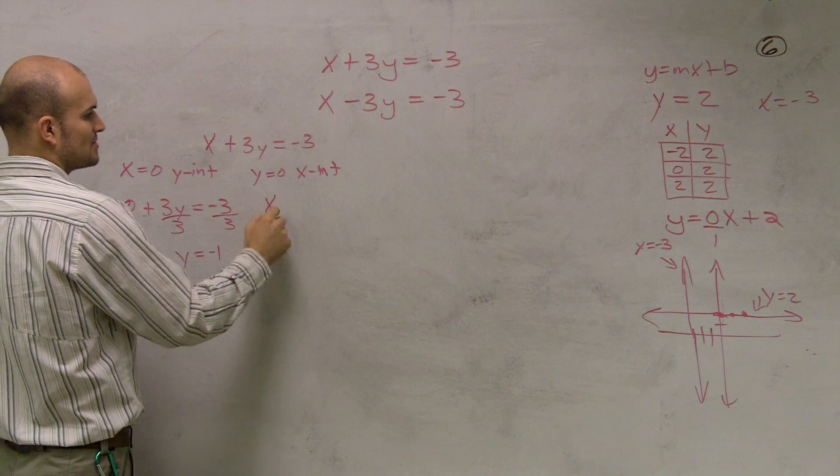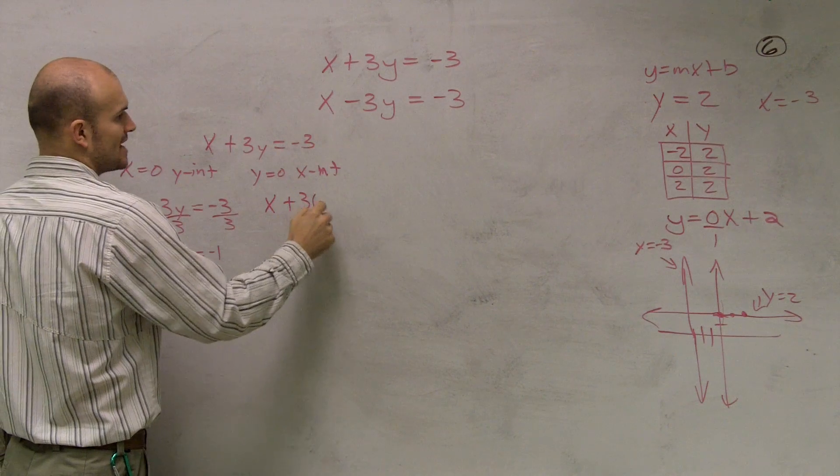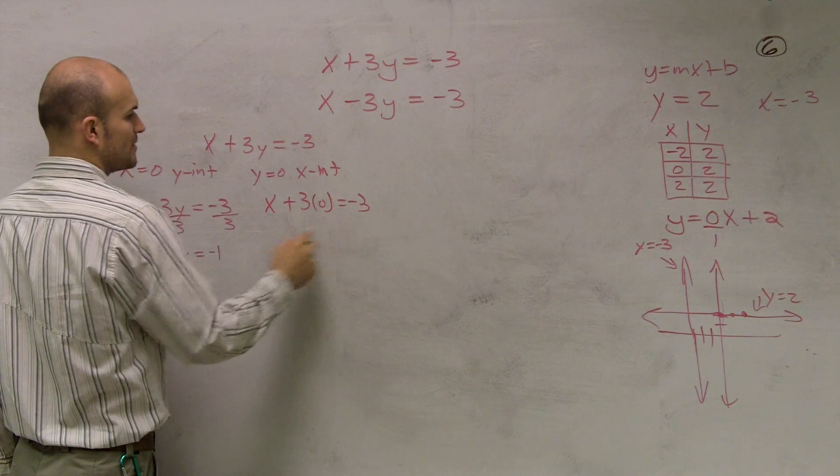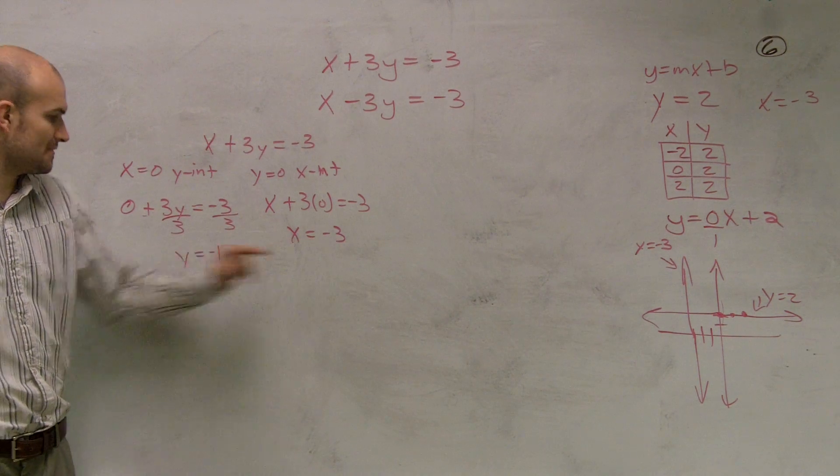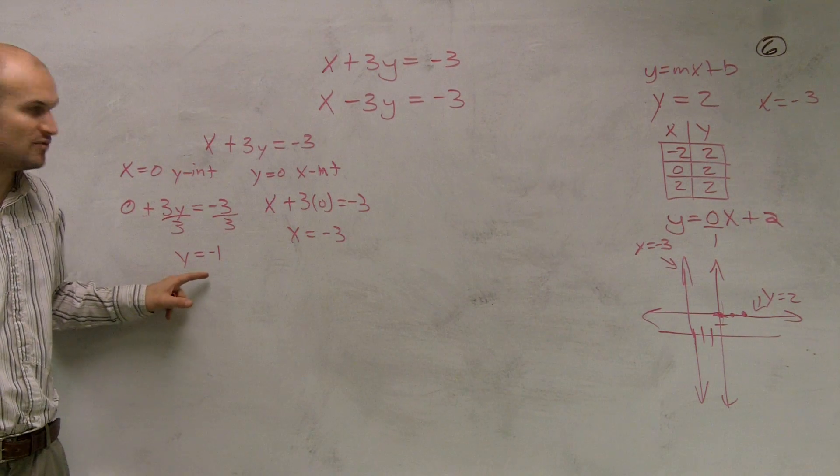For this one, I put a zero in for Y. So I have X plus three times zero equals negative three. So X equals negative three. So therefore, my X intercept is at negative three and my Y intercept is at negative one.